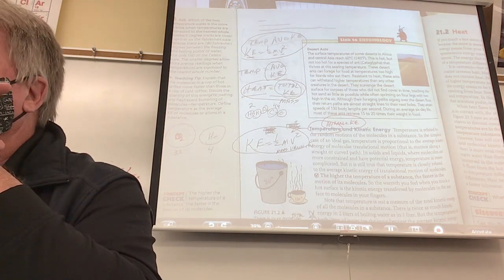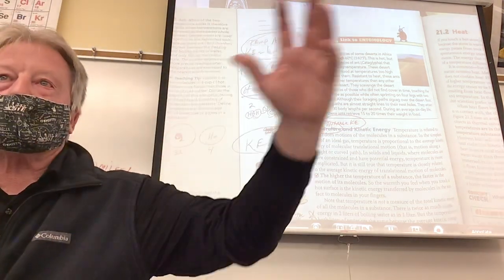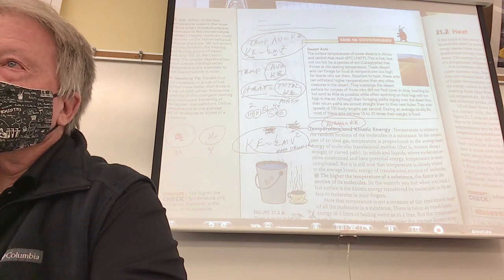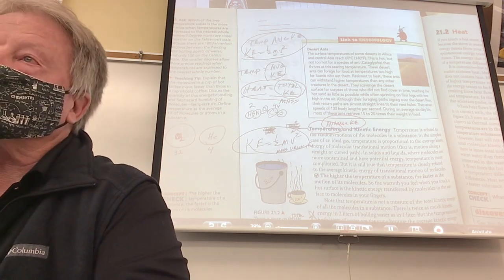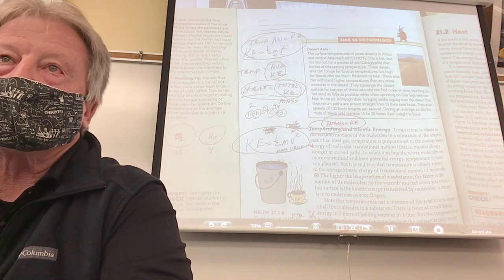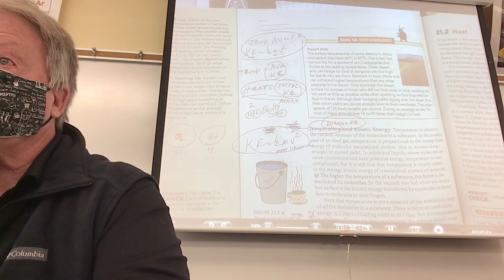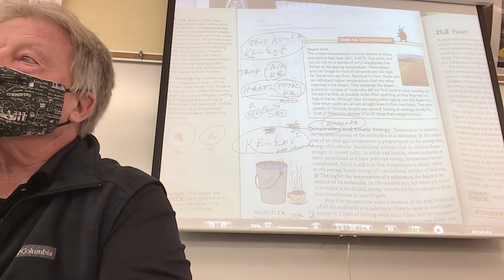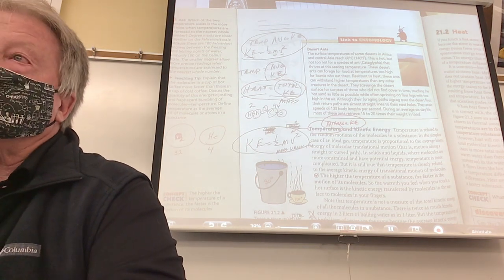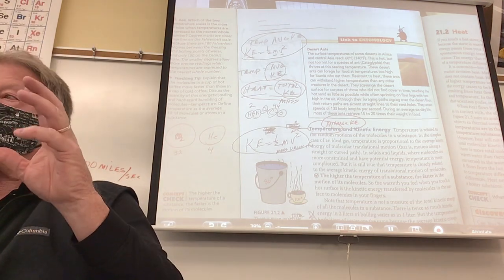Your book might ask: which has a higher temperature — a thimble of boiling water, or an iceberg the size of this building? The thimble wins on temperature — about 100 degrees Celsius. The thimble also wins on average kinetic energy per particle. But which has more thermal energy? The iceberg. An iceberg may feel cold, but it's way above absolute zero and has a huge amount of total kinetic energy.